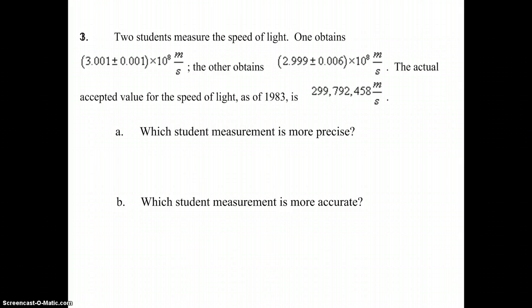So questions are A, which student measurement is more precise, and B, which student measurement is more accurate? Well, this word indicates that you're using an instrument, a measuring device, that is more precise or has smaller amount of built-in error to it. So which measurement represents that? Well, you would pick this measurement here, because the plus or minus is 0.001, as opposed to the other measurement, which is plus or minus 0.006. That makes this first measurement more precise, because it has smaller amount of error in the measuring instrument.